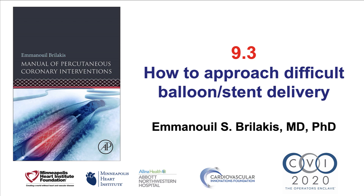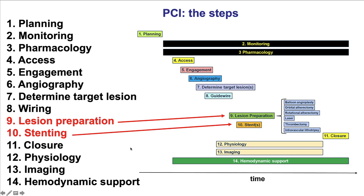This is Manos Brilakis from the Minneapolis Heart Institute and the Cardiovascular Innovations Foundation, presenting video 9.3 for the Manual of Percutaneous Coronary Interventions. This video discusses what to do if there is difficulty delivering a balloon or a stent, or any other coronary equipment. This is part of steps 9 and 10 of the 14 steps of percutaneous coronary intervention, which have to do with lesion preparation and stent delivery.